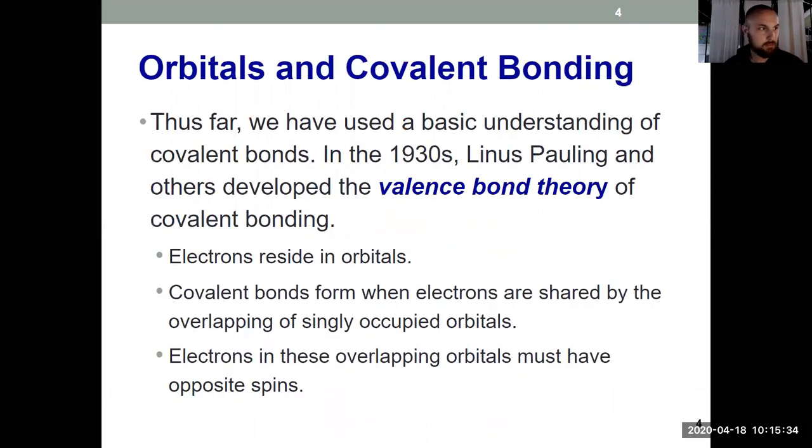So how do we tie this in to Lewis structures and bonding, those shapes? Previously, we were just looking at a basic understanding of a covalent bond. It's sharing a pair of electrons. In the 30s, Linus Pauling helped develop what's known as the valence bond theory of covalent bonding. That same Linus Pauling that gave us the electronegativity from Chapter 7. In valence bond, or VB theory, it tells us that electrons reside in orbitals. Covalent bonds form when electrons are shared. And the only other tricky thing is that electrons in those overlapping orbitals have to have opposite spins, so thinking about that last quantum number from Chapter 6, M sub S, one has to be plus one-half, the other one has to be minus one-half.